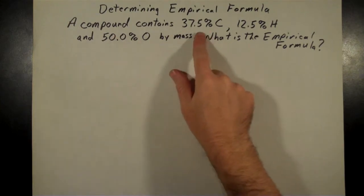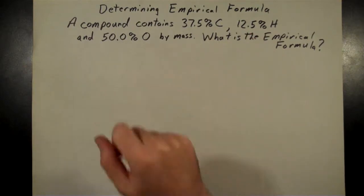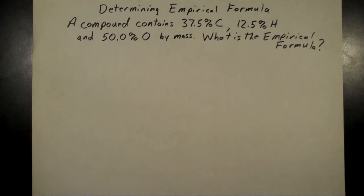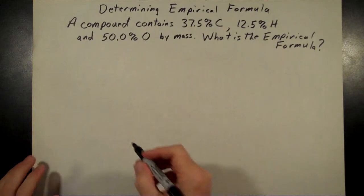So this one says a compound contains 37.5% carbon, 12.5% hydrogen, and 50% oxygen. Again, it's by mass. What is the empirical formula for this one? So it works pretty much the same way as if you have grams. In fact, all you've got to do is just change each of these percent signs into a gram amount.